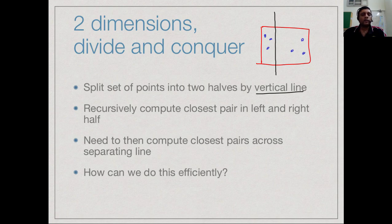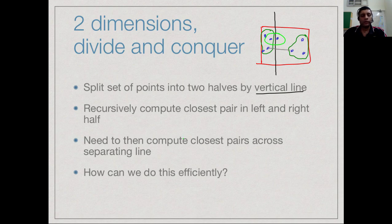Using divide and conquer, we compute the smallest distance among the points to the left separately, and the smallest distance among the points to the right. But this does not tell us anything about distances between points on the left and points on the right — there could very well be points very close to each other across the boundary. So we need to compute the closest pairs across the separating line, and this is the challenge.